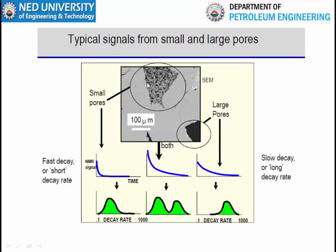All signals coming from shorter decay times indicate responses from bound fluids in small pores — these generally do not contribute to production and permeability is not present in these small pores. The permeability of the rock is comprised of the permeability from the large pores containing movable fluid. By analyzing the decay rate we can estimate porosity and permeability. When gas is in a porous formation, it decays faster than its bulk rate due to diffusion effects, and NMR porosity is lower because of the low hydrogen index of gas. By observing the large pore responses, we can also identify whether we have gas or oil.